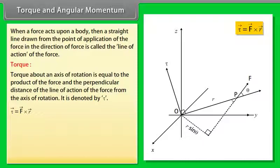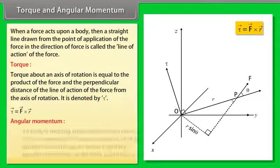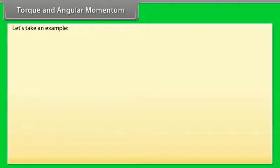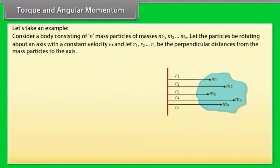When a force acts upon a body, the straight line drawn from the point of application of the force in the direction of the force is called the line of action of the force. Torque about an axis of rotation is equal to the product of the force and the perpendicular distance of the line of action from the axis of rotation. It is denoted by τ: τ vector = r vector × F vector.